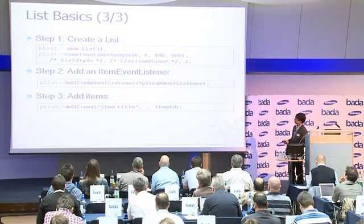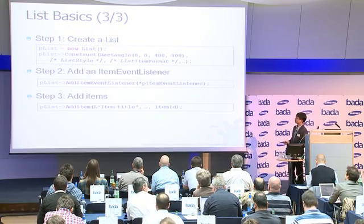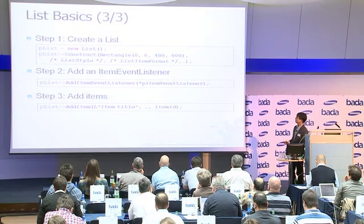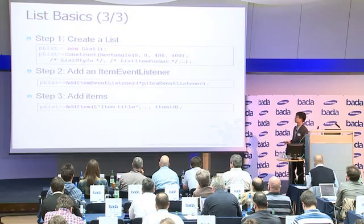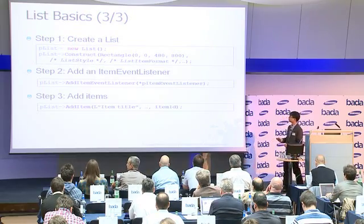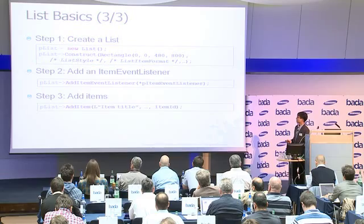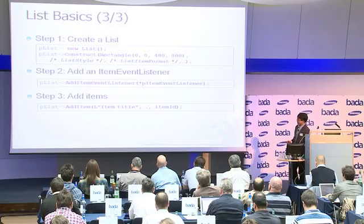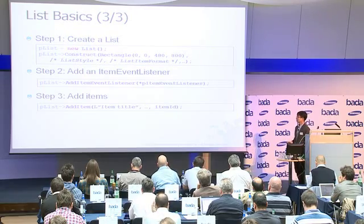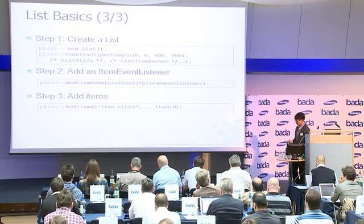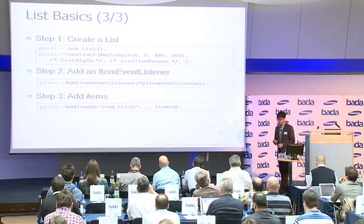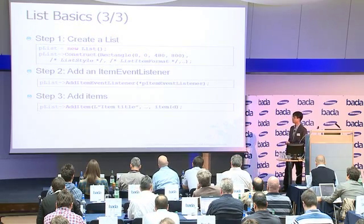This is how it looks in code. We use two-phase construction: we create the object and construct the list with its size. Depending on what you want, you define the style and the format — there are 11 predefined formats available. To handle events, you add the listener. You add items to the list and the list is complete. Since a list is a control, you have to add it to a container before you can use it, so typically you add it to a form, a panel, or a pop-up.